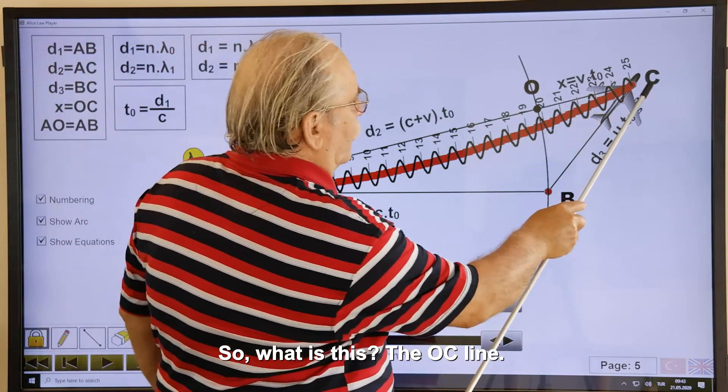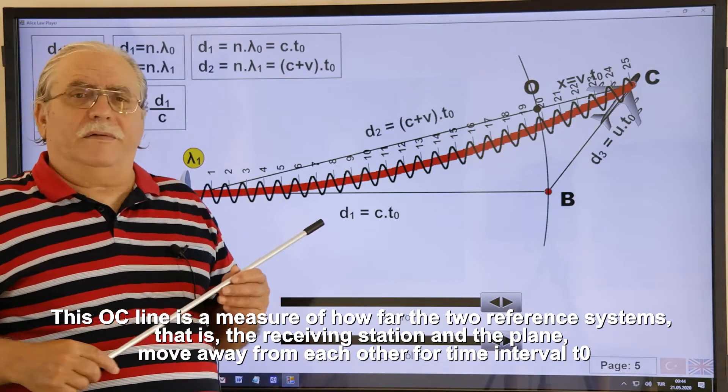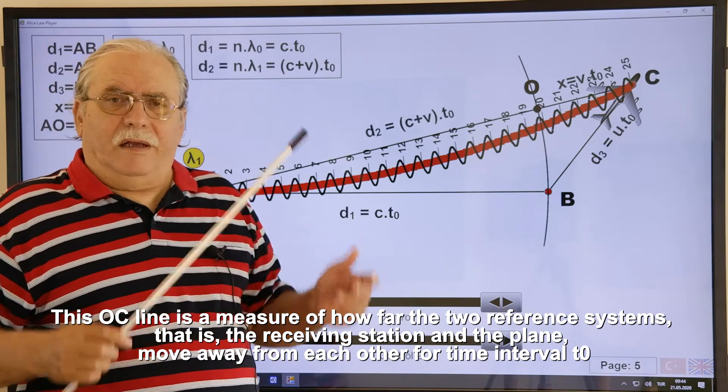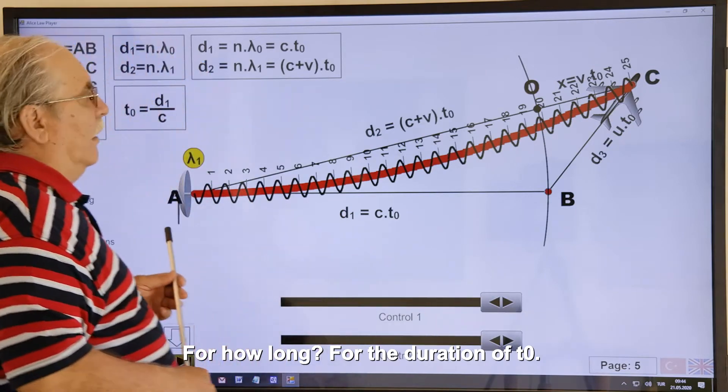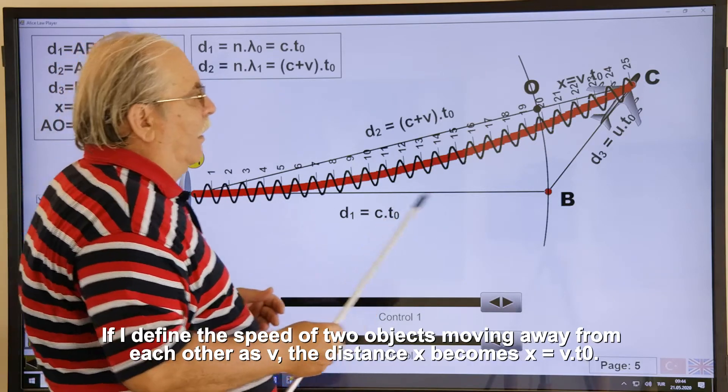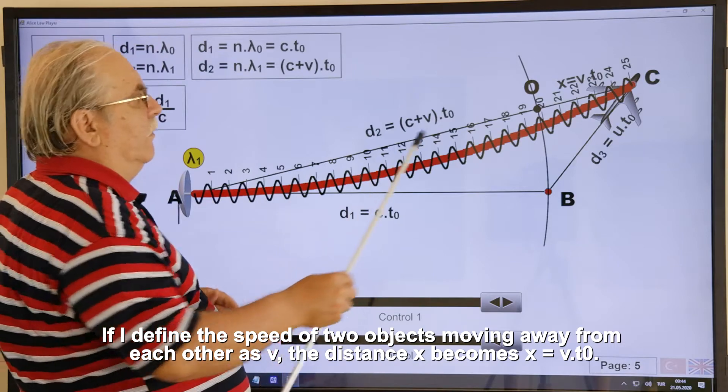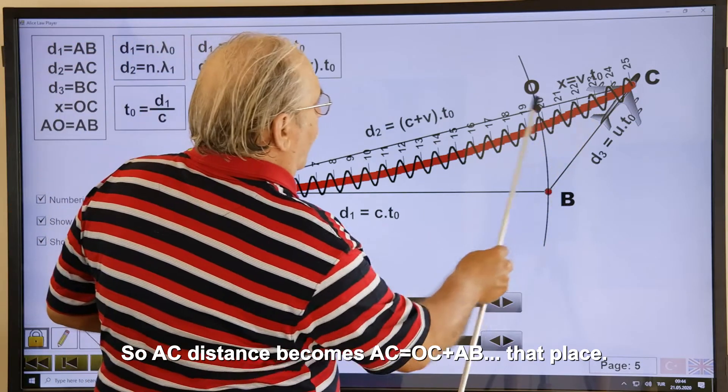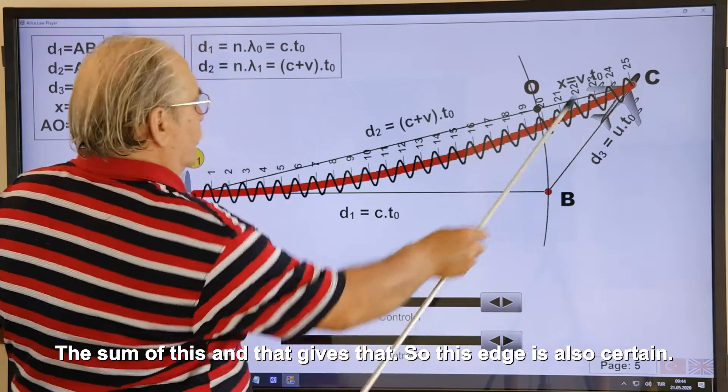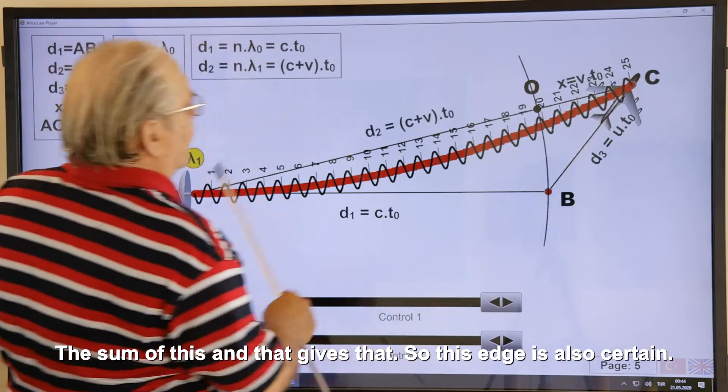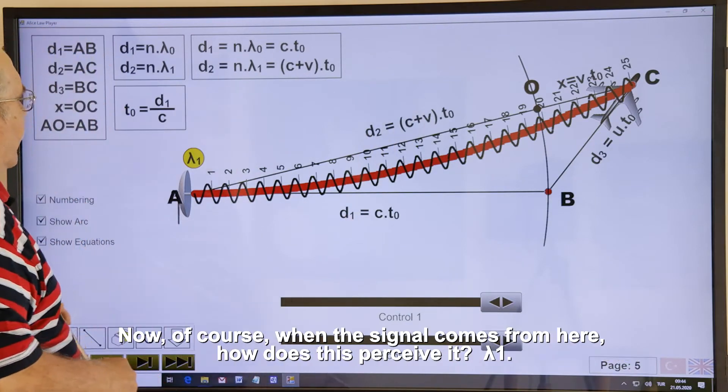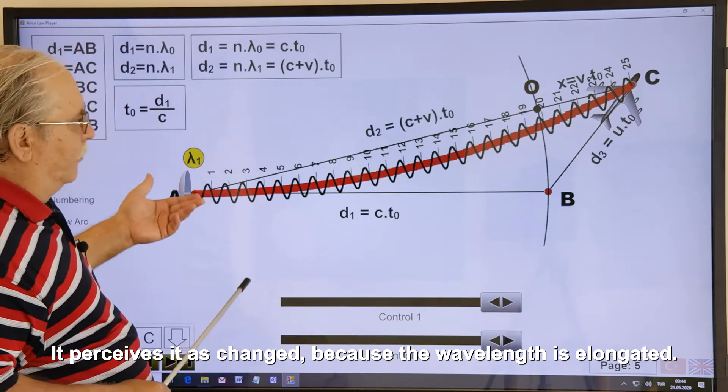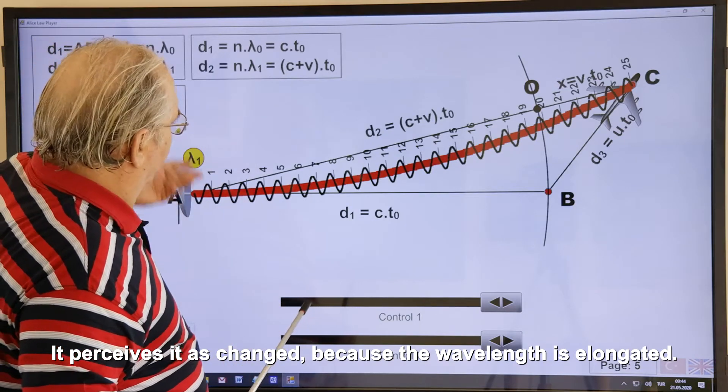So, what is this? The OC line. This OC line is a measure of how far the two reference systems, that is, the receiving station and the plane, move away from each other for time interval T0. So, for how long? For the duration of T0. If I define the speed of two objects moving away from each other as V, the distance X becomes X equal VT0. So AC distance becomes AC equal OC plus AB. That place. The sum of this and that gives that. So this edge is also certain. Now, of course, when the signal comes from here, how does this perceive it? Lambda 1 perceives it as changed. Because the wavelength is elongated.